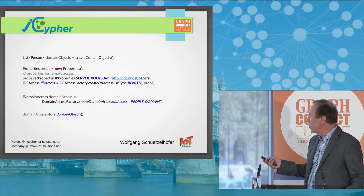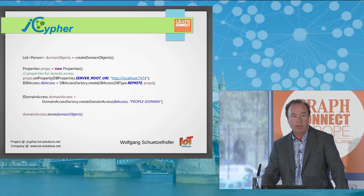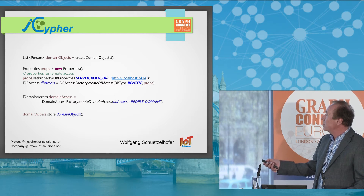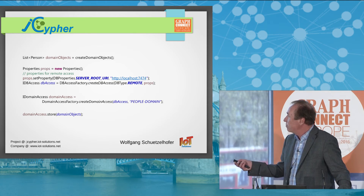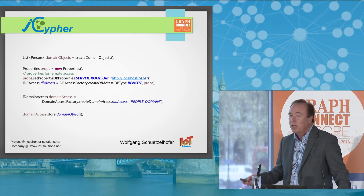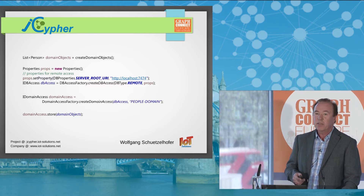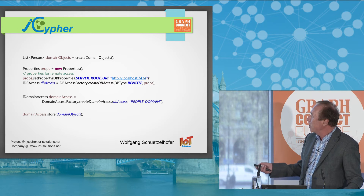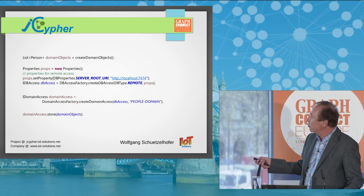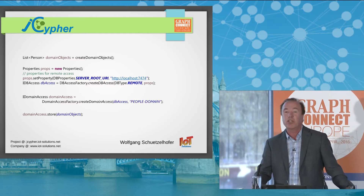Now let's look at some Java code. First, we instantiate some domain objects and populate the graph — that's done behind a create method. The create method returns a list of persons which serve as root objects of the domain object graph. Next, we need access to a graph database, so we instantiate an IDB access object by means of a factory. We specify the database connection to be remote, and we need some properties — most importantly, the URL where we have a Neo4j server running.